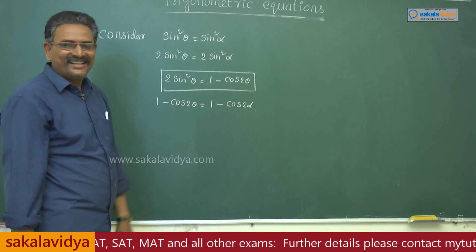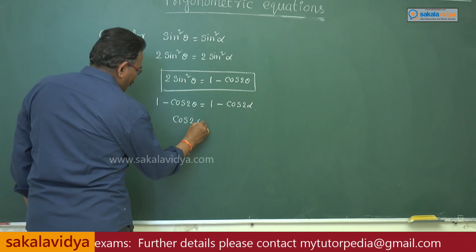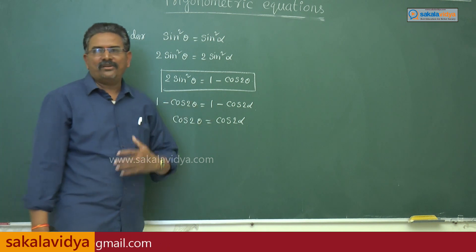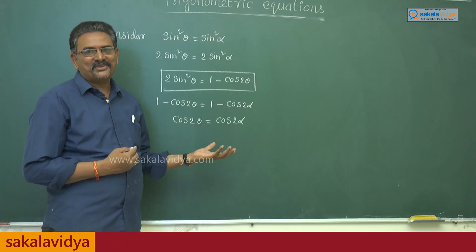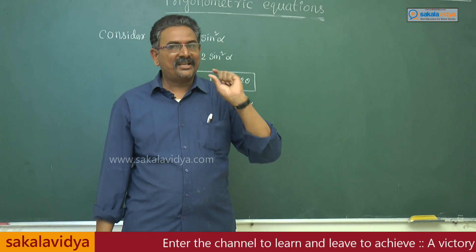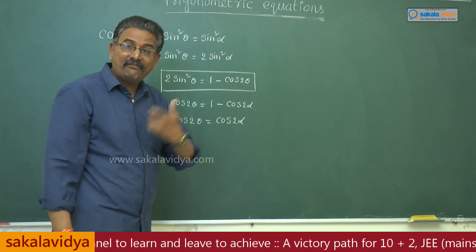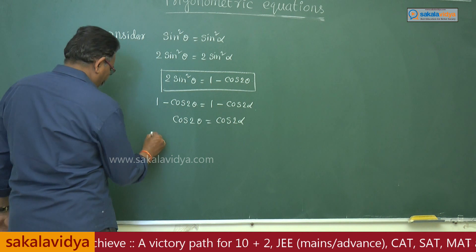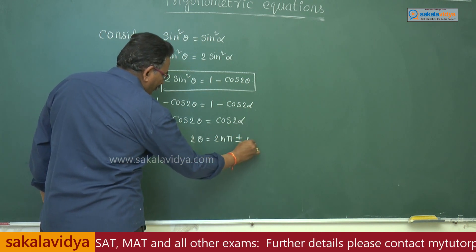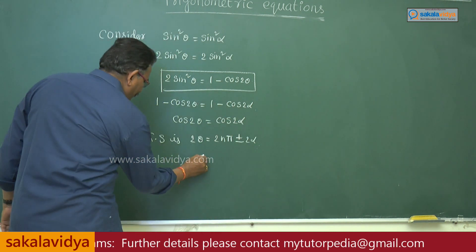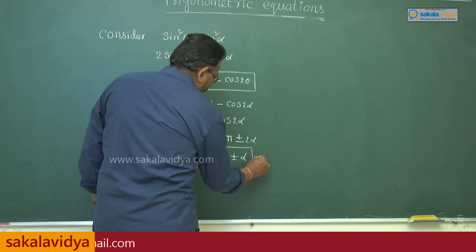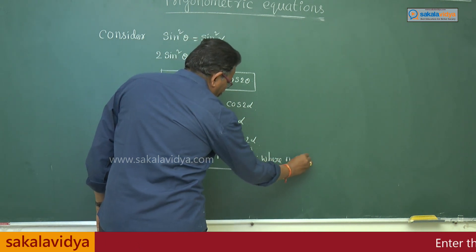The ones cancel on both sides, giving us cos 2 theta equal to cos 2 alpha. We already know the solution for cos theta equal to k: theta equals 2n pi plus or minus alpha. Here, 2 alpha is the principal value, so the general solution is 2 theta equal to 2n pi plus or minus 2 alpha. Dividing throughout by 2, we get theta equal to n pi plus or minus alpha, where n belongs to Z.